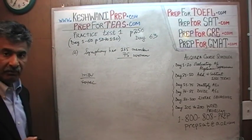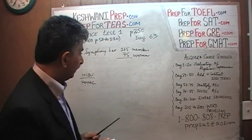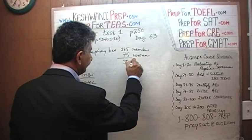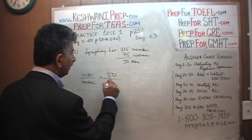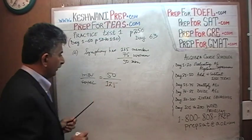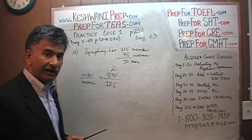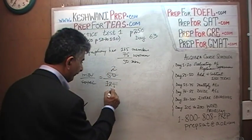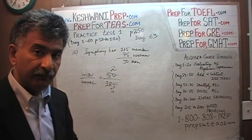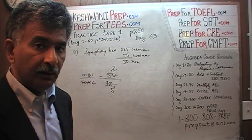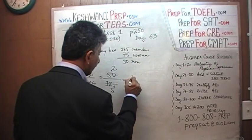We have to figure out the number of men in the symphony, which is very straightforward. If there are 75 women out of a total of 125, there would have to be 50 men. So it's simply 50 over 125. Let's divide top and bottom by 25 — there are two 25s in 50 and five 25s in 125. So that's it. Two fifths is the answer. The ratio is two to five.